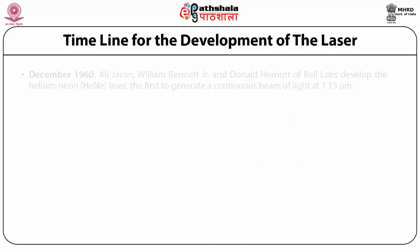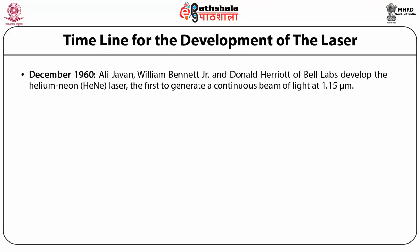Gould left the university a few months later to join private research company TRG, Technical Research Group. In 1958, Townes, a consultant for Bell Labs, and his brother-in-law, Bell Labs researcher Arthur L. Schawlow, in a joint paper published in Physical Review Letters showed that masers could be made to operate in the optical and infrared regions and proposed how it could be accomplished. At the Lebedev Institute, Basov and Prokhorov also explored the possibilities of applying maser principles in the optical region. In December 1960, Ali Javan, William Bennett Jr., and Donald Herriott of Bell Laboratories developed the helium-neon laser.